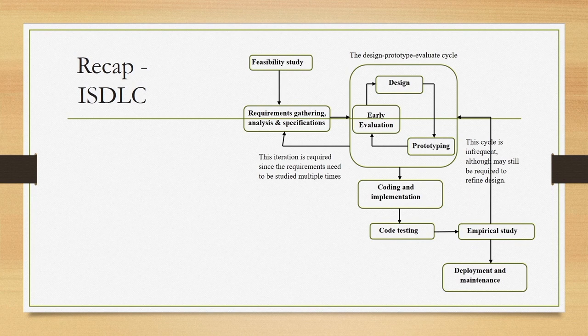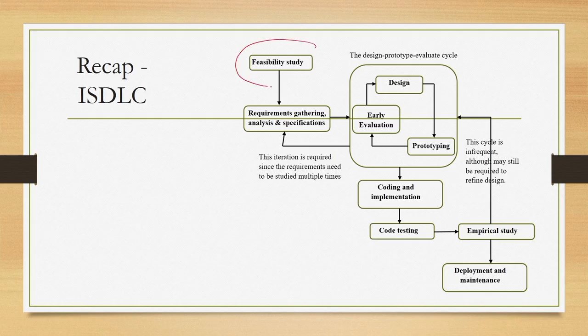We will be focusing on the individual stages of this life cycle throughout this course — the details of these stages will be the main content. The first stage is feasibility study, where we first try to see whether the development process is feasible with respect to available resources, including manpower, cost, time, and computing resources.